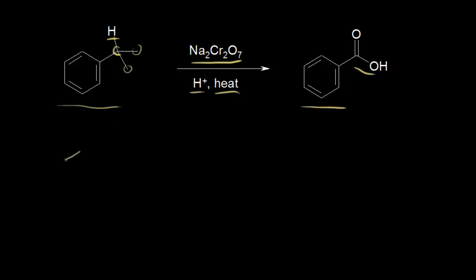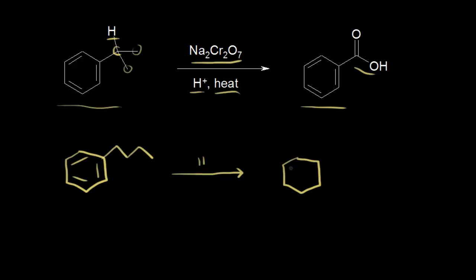Let's do an example starting with butylbenzene — four carbons for my alkyl group. Adding sodium dichromate, sulfuric acid, and heat, we're going to oxidize our side chain. It doesn't really matter the length of the alkyl group — whether it's four carbons or more — we're still going to get a carboxylic acid. The reaction still occurs at the benzylic position and we get a carboxylic acid product.